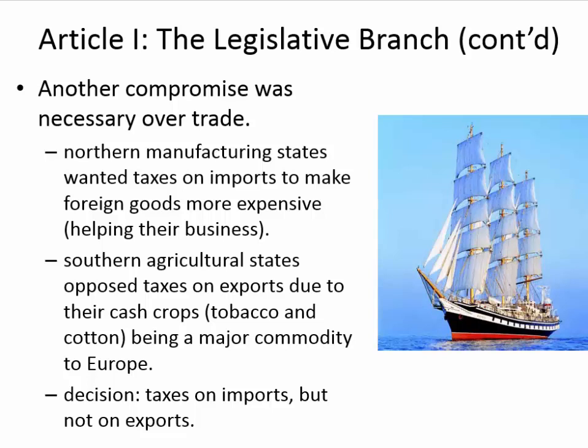Another compromise was necessary over trade. Northern states that were producers of goods wanted heavy import tariffs so that foreign goods would be more expensive than domestic goods, helping their businesses sell American products. Southern agricultural states opposed taxes on exports due to their cash crop economy — tobacco and cotton were major commodities in Europe. The easy decision: there would be taxes on imports, but not on exports. No exported product from the United States has ever been taxed, right through to today.